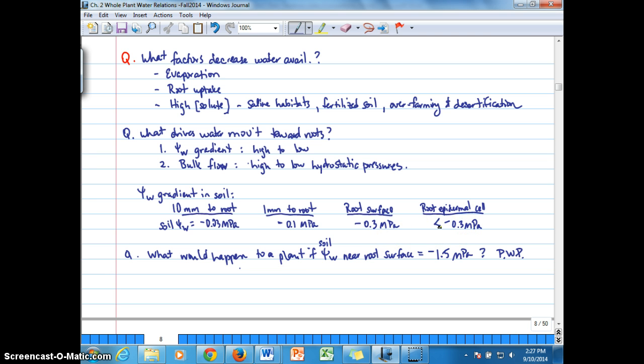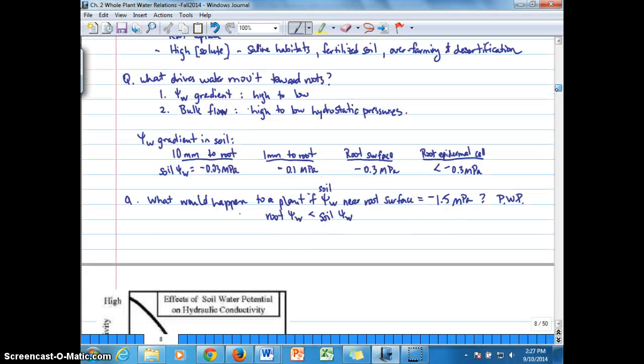And then we ended with the question, what would happen to a plant if soil water potential near the root surface had a negative 1.5 megapascals water potential? And remember, that's the point at which permanent wilting point occurs. So you should be able to answer that by now with regard to what happens with the root. So remember, the root water potential has to be less than the soil water potential. But when this root water potential goes below negative 1.5, then that's when turgor loss is so great that the cell can't recover. It starts to become non-functional.